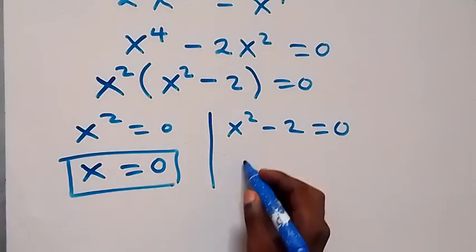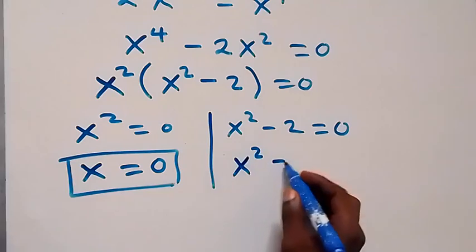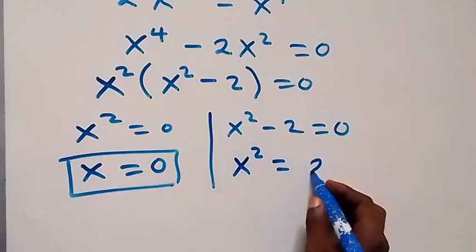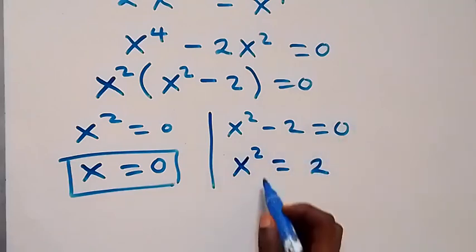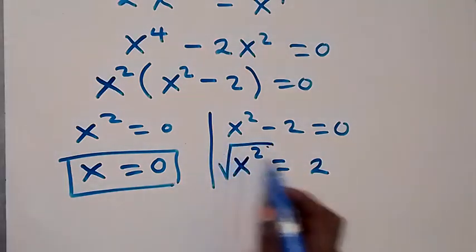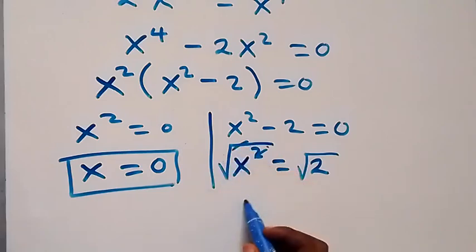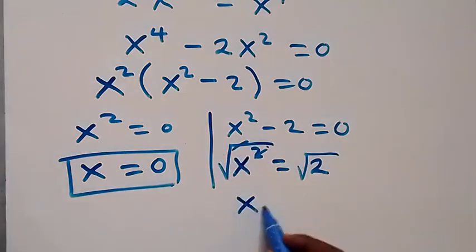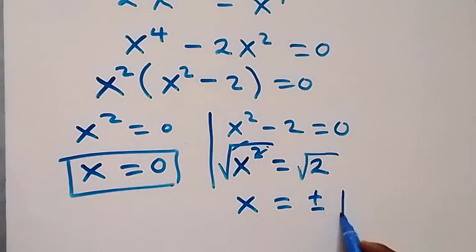For the second case, x squared equals 2. Taking the square root of both sides, the square cancels the square root and we get x equals plus or minus root 2.